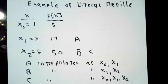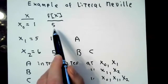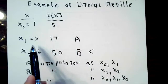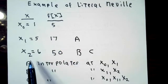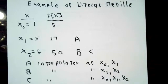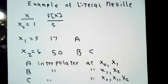I'm going to have three data points. x0 is 1, with corresponding function value 5 — that's f[x0]. x1 is 5, with corresponding function value 17. x2 is 6, with corresponding function value 50. I'm going to calculate three things: A, B, and C. A is the interpolating polynomial that interpolates at x0 and x1. B will interpolate at x1 and x2. And then C will interpolate the data at x0, x1, and x2.